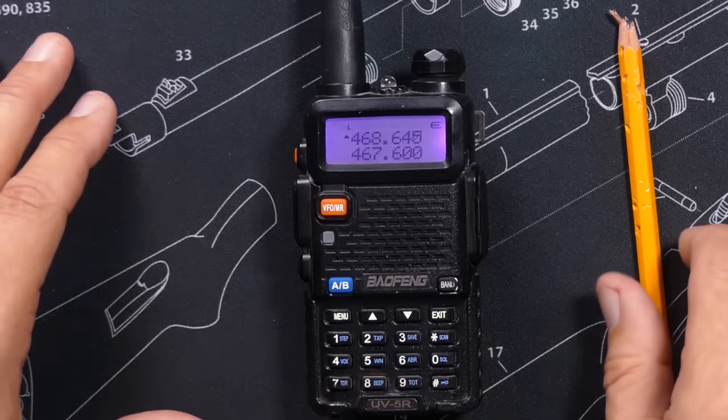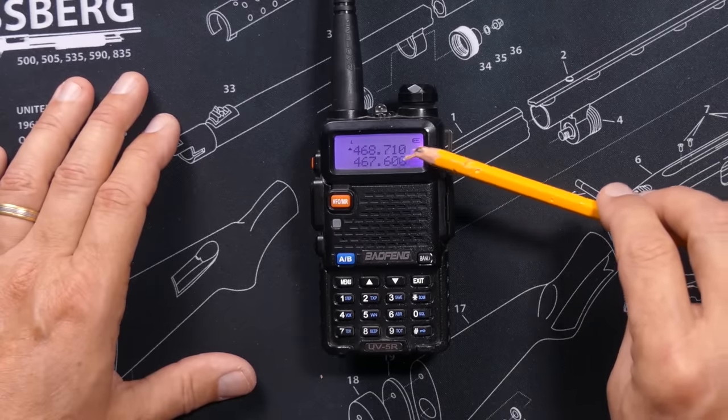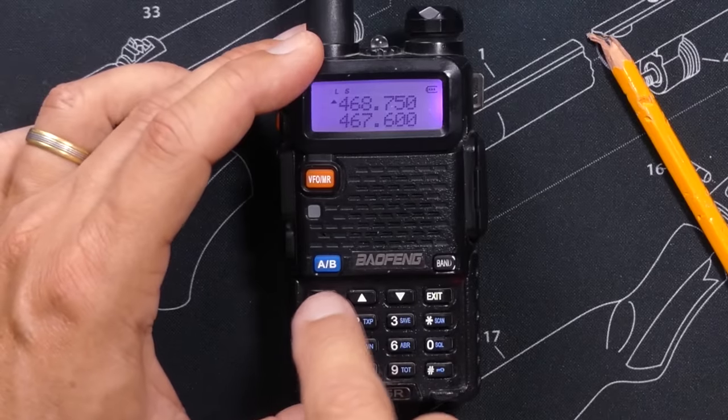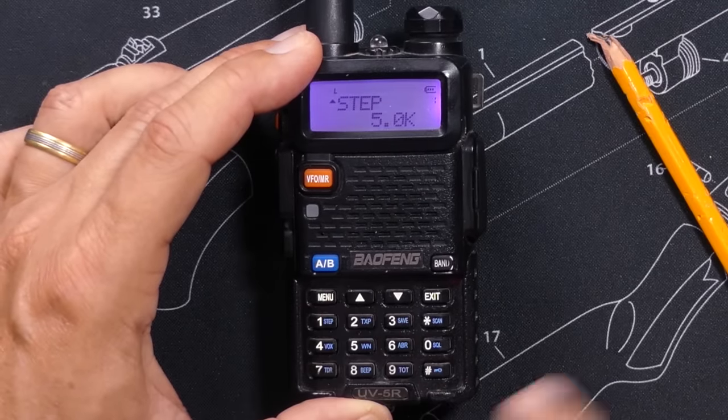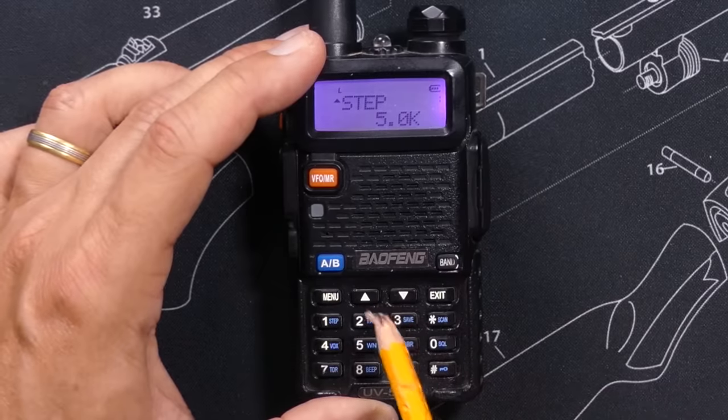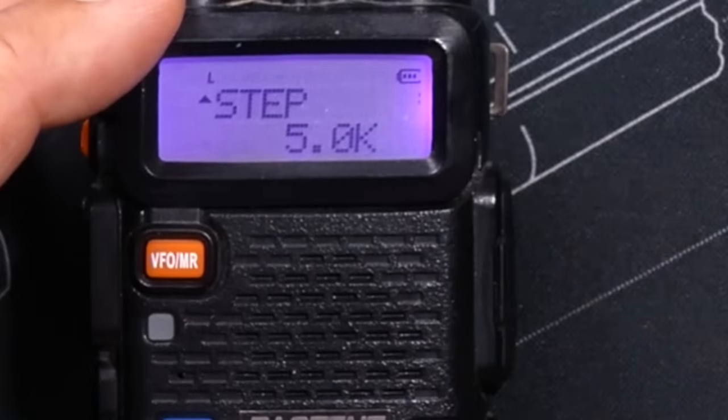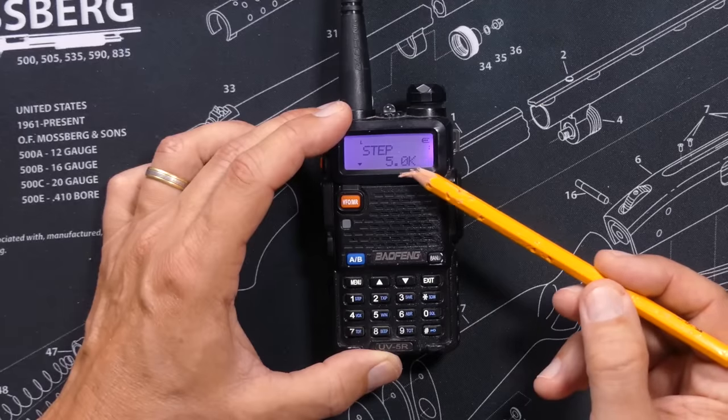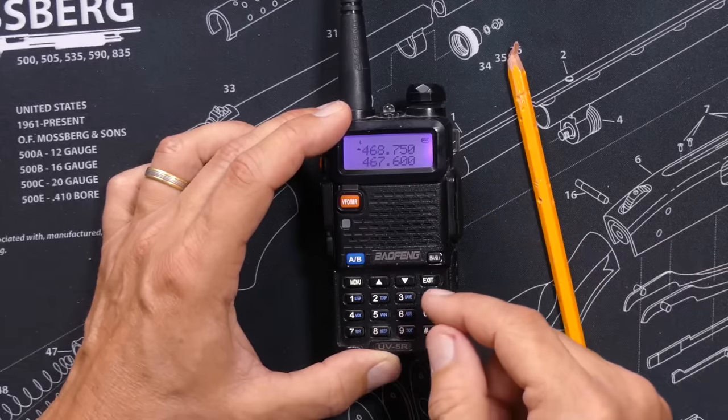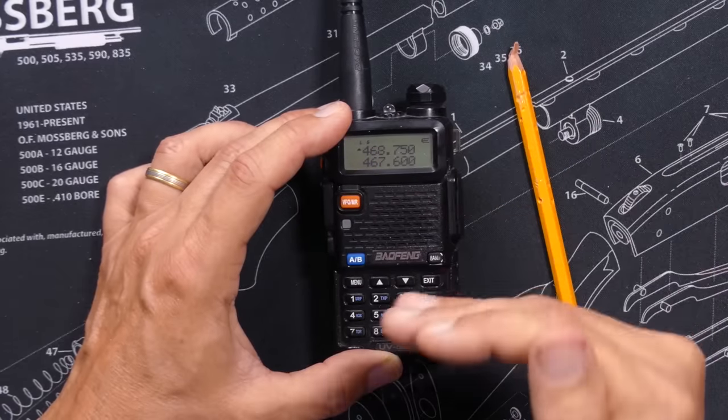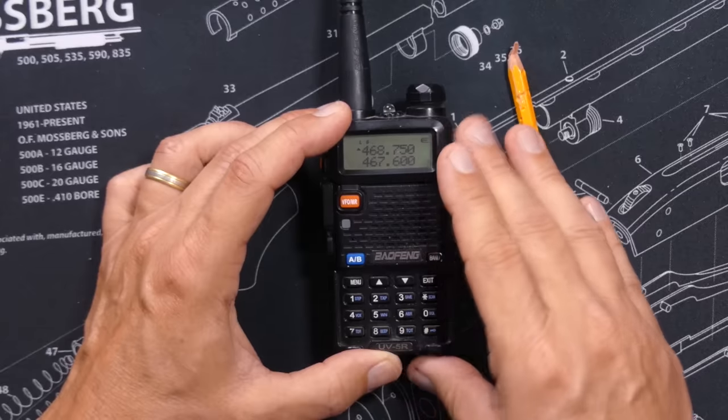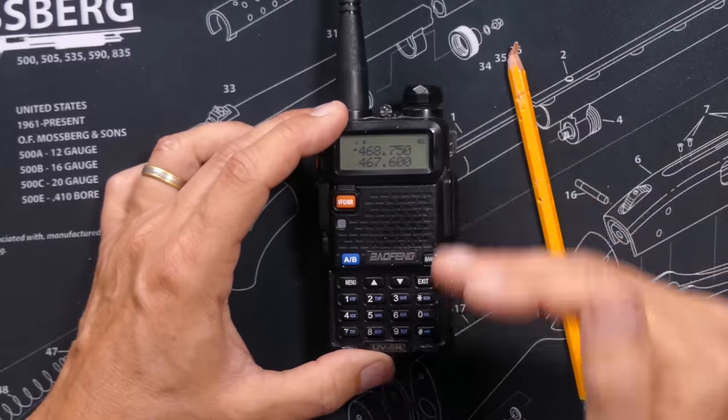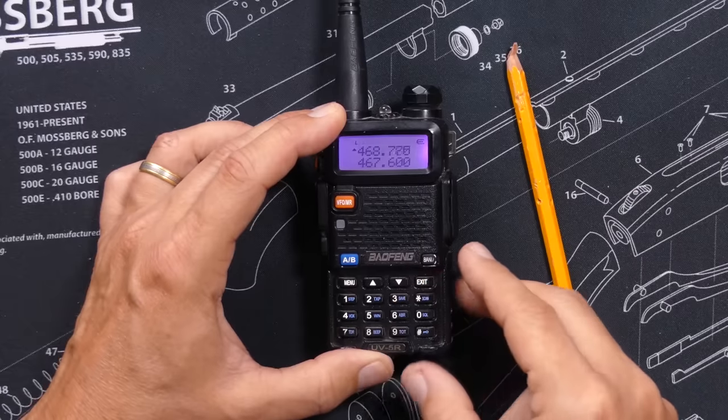And you will see that it is now scanning through the frequencies. And it is scanning in increments that you have entered in menu option one. So if we go to menu option one by pressing menu and then pressing the up arrow key until we get to the flashing number one, we will see that we are in the step menu setting and the menu setting is currently at five kilohertz. That means that when the radio is scanning, it will increment or jump to the next frequency at a step of five kilohertz.